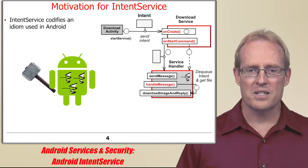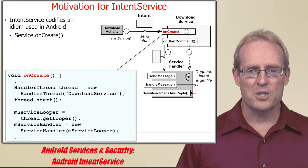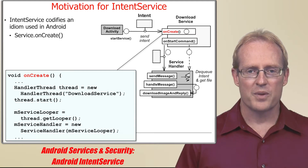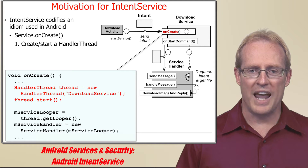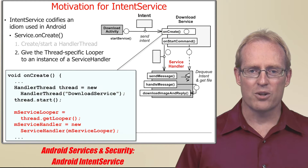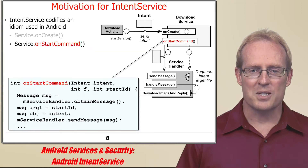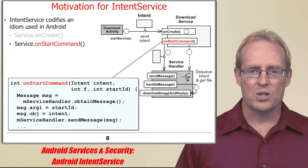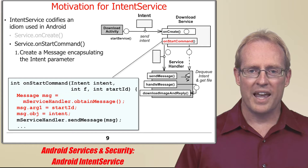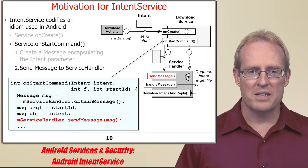This idiom involves two classes and several methods. The first step involves overriding the onCreateHook method defined by a service, which creates and starts a handler thread that processes intent commands in the background, and then gives the handler thread's looper to an instance of a service handler so it will handle messages in a background thread. The second step involves overriding the onStartCommandHook method to create a message that encapsulates the intent parameter and the ID of the start request, and passes the message to the service handler by calling its sendMessage method.